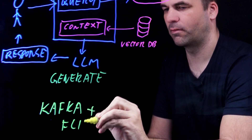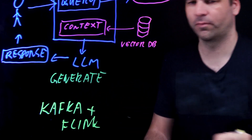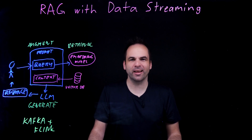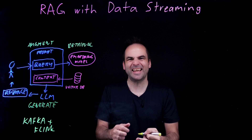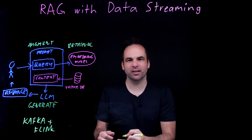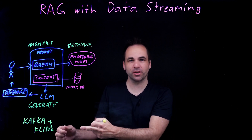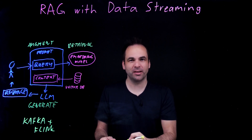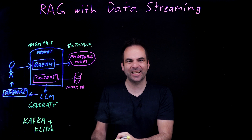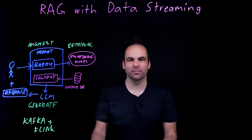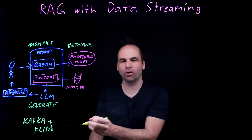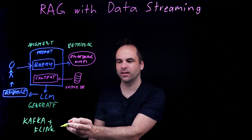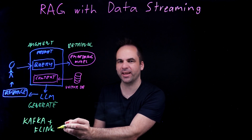Kafka is the de facto standard for streaming data — it's real time, scalable, and reliable. In this combination, you can take any kind of data, no matter if it's coming from a real-time stream or from any kind of data source like a database or a file. You feed the data into the stream and then correlate it with the stream processor, which is Apache Flink.